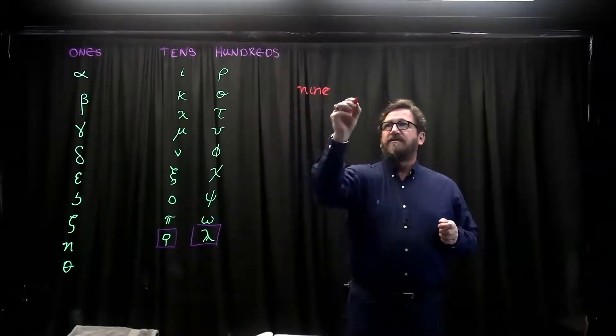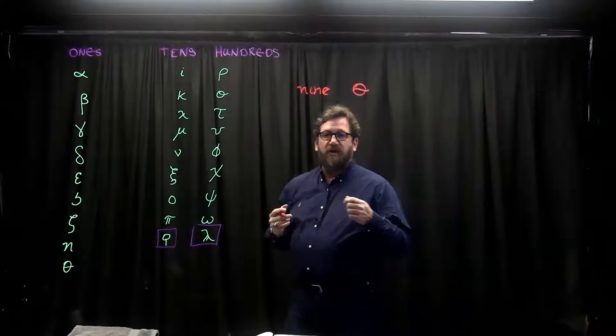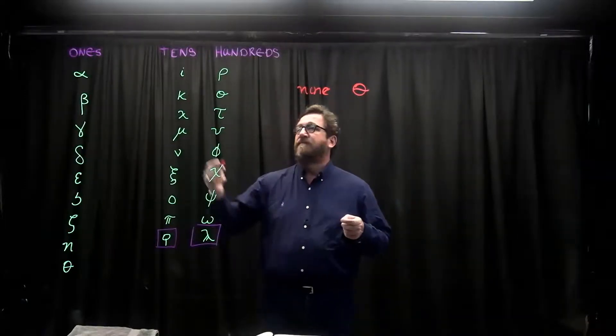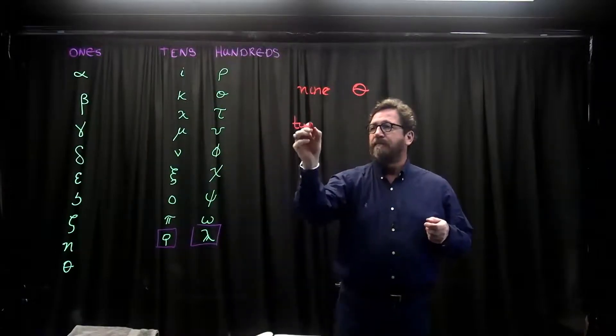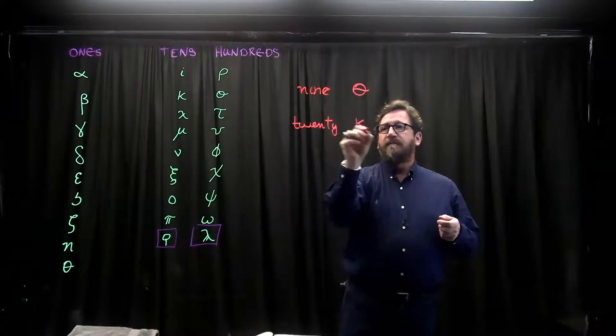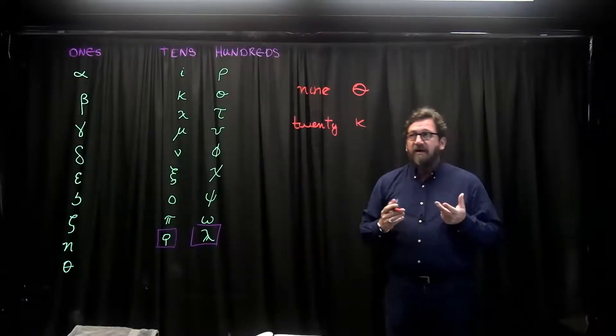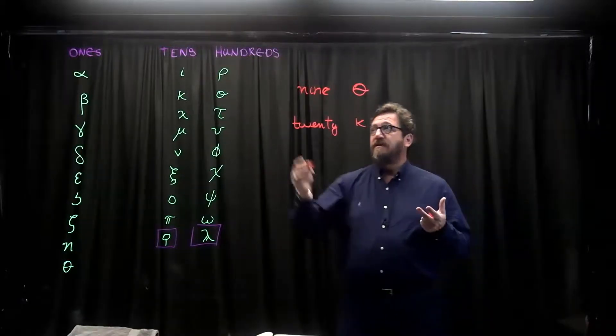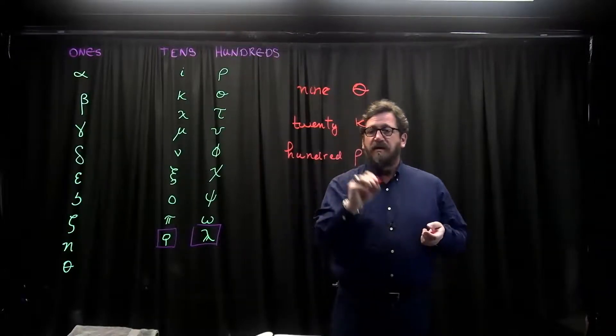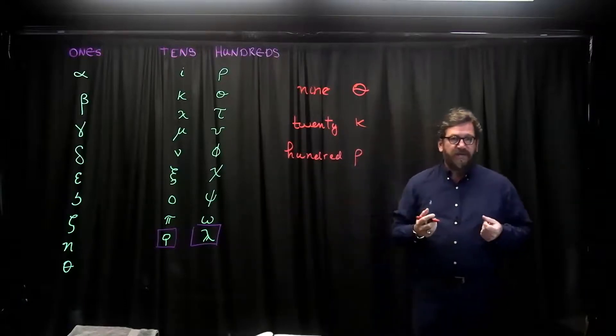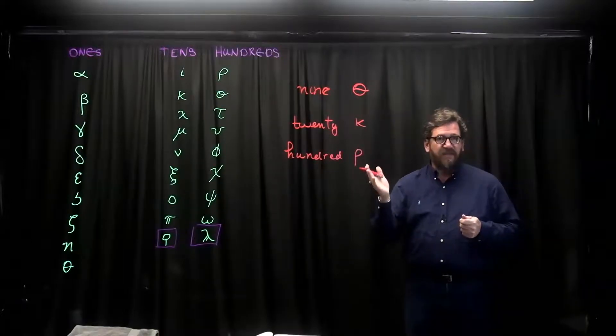So if a Greek was asked to express nine, they would write theta. Likewise, if they want to express, let's say 20 tens—10, 20 is kappa. So that one letter would represent the amount 20. So now then, if they needed their hundreds, 100 would be rho.